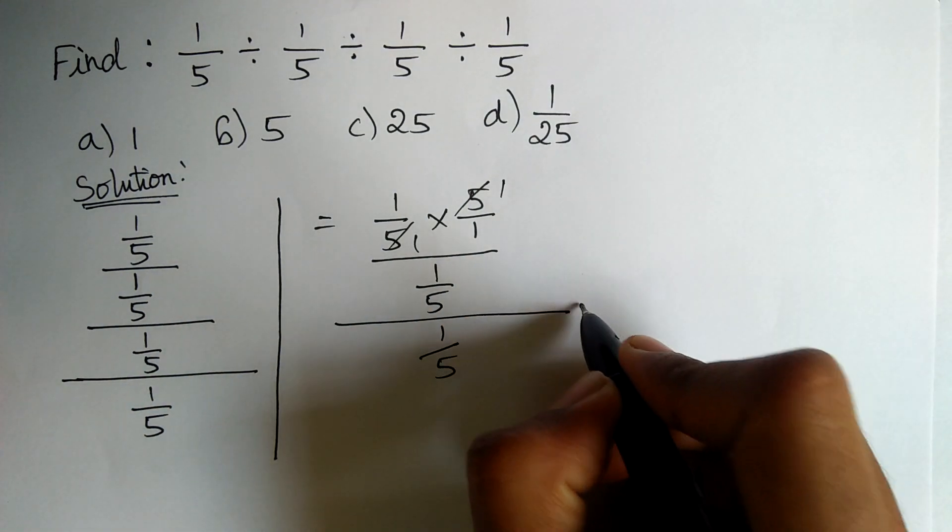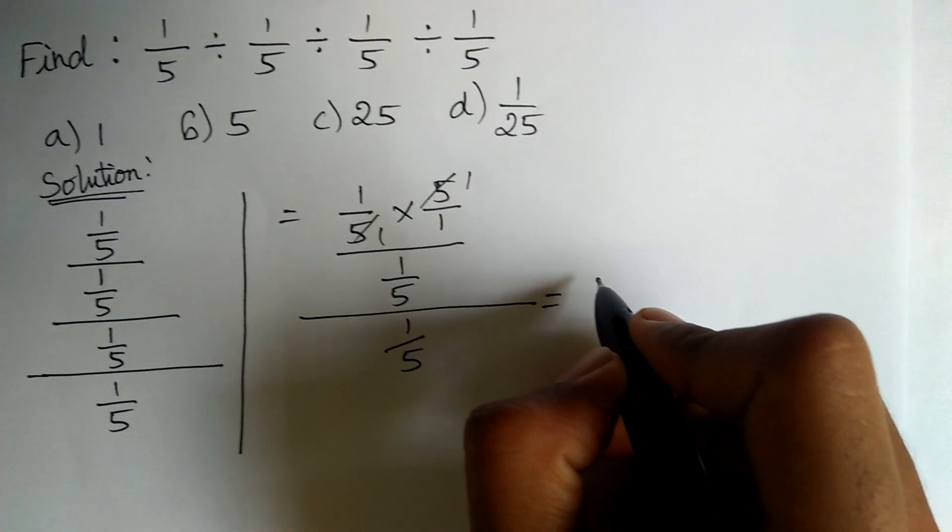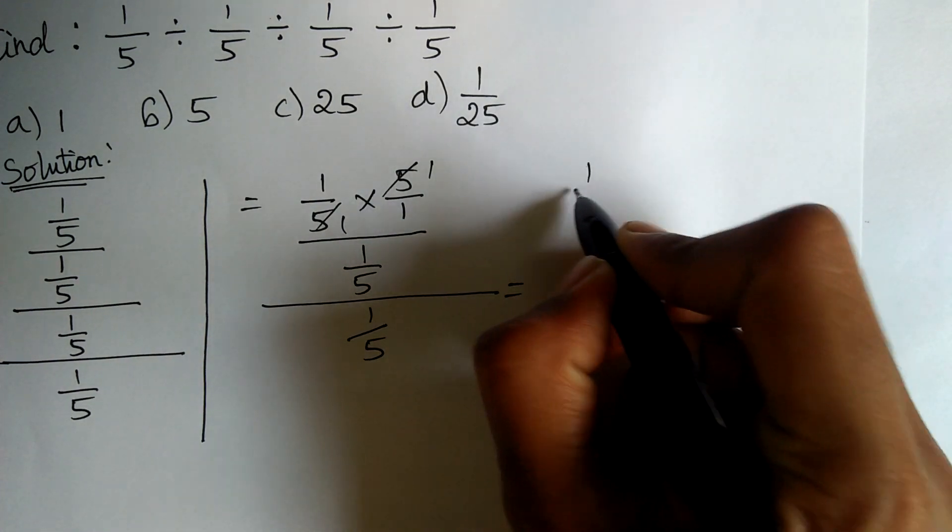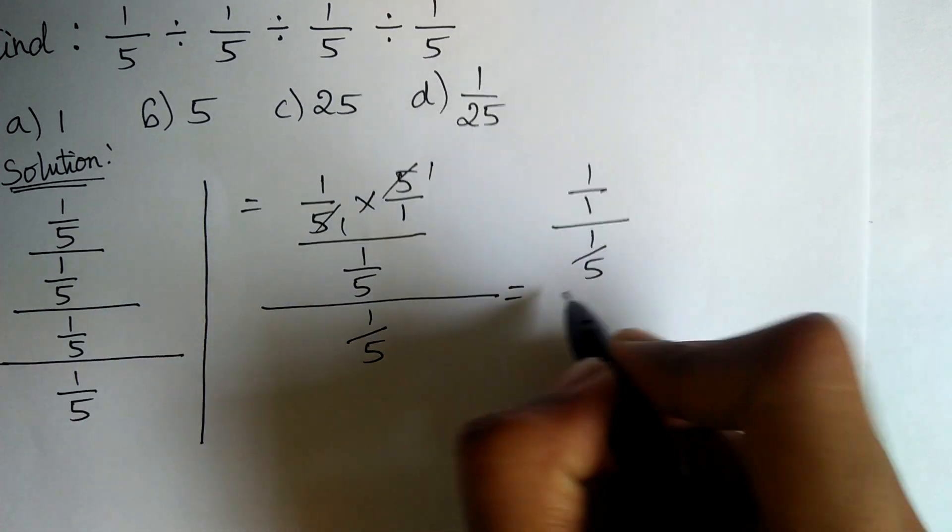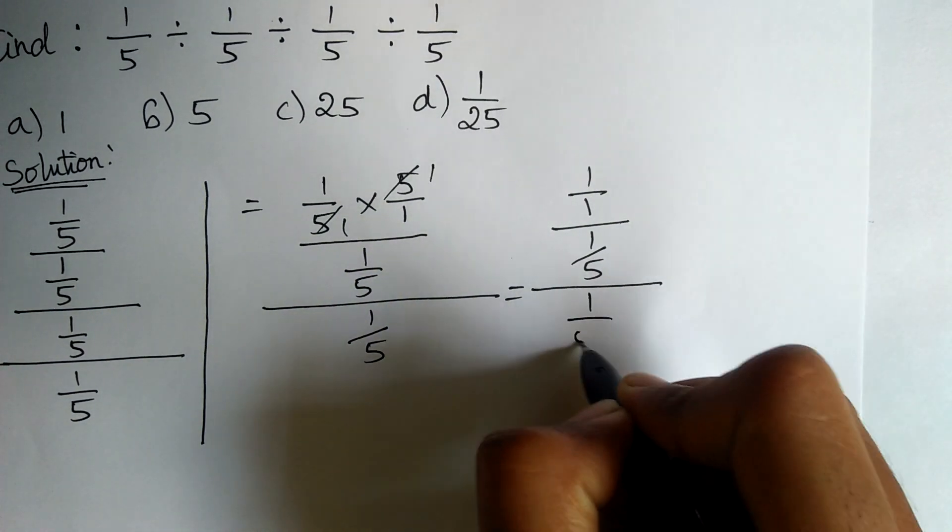This is simplified as 1 by 1 divided by 1 by 5, the whole divided by 1 by 5.